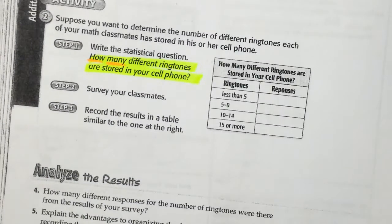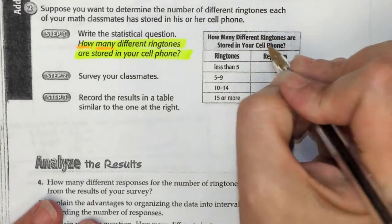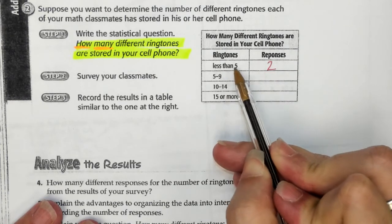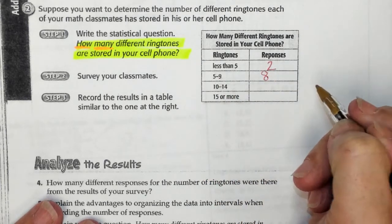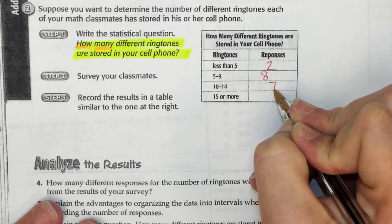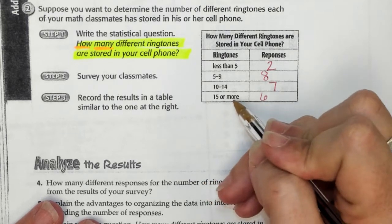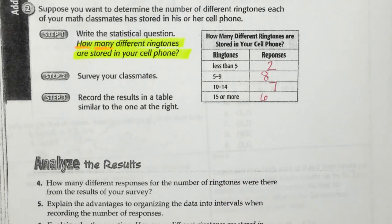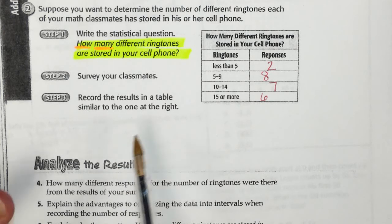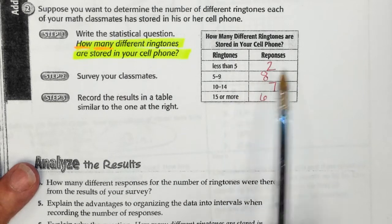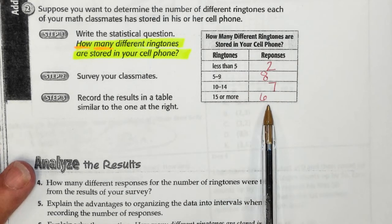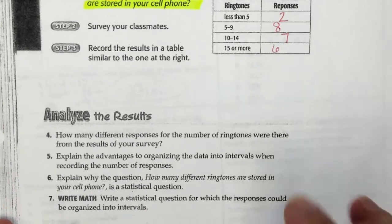We're going to fill in some numbers today. Let's pretend two of us are lazy and only have less than five ringtones, five to nine might be eight, ten to fourteen is seven, and six of you got really crazy and did fifteen or more. Once you've surveyed them, you record the results in a table. You can use different table formats — the goal is to show organization.